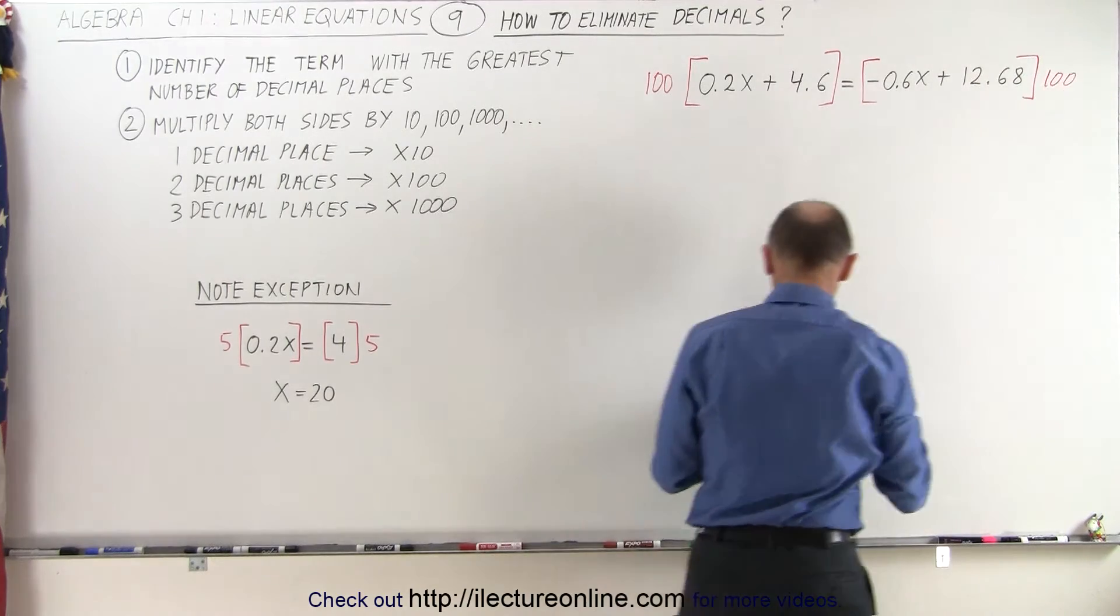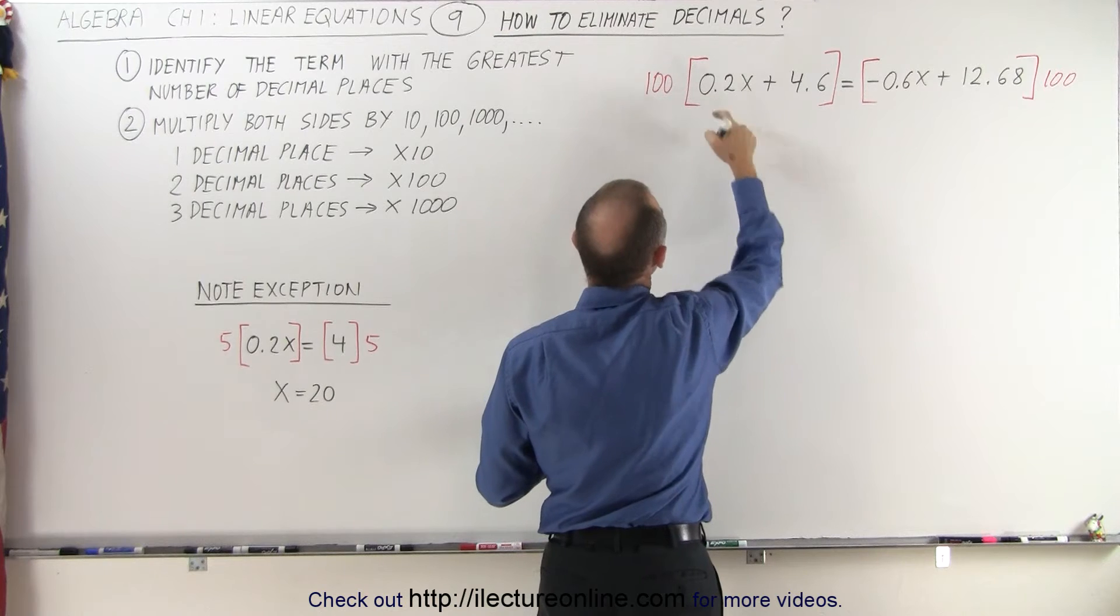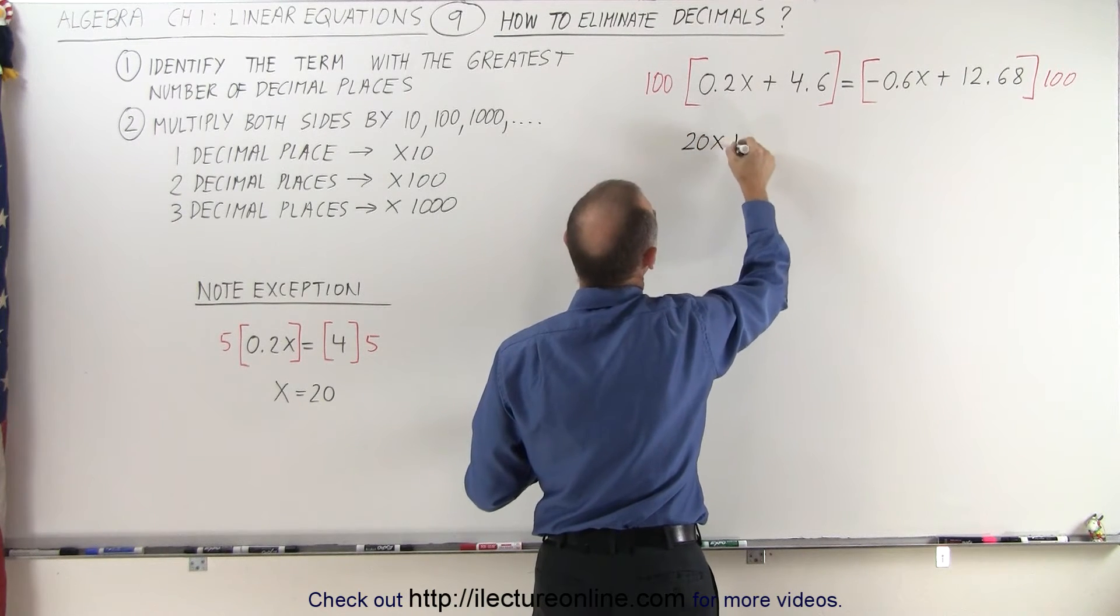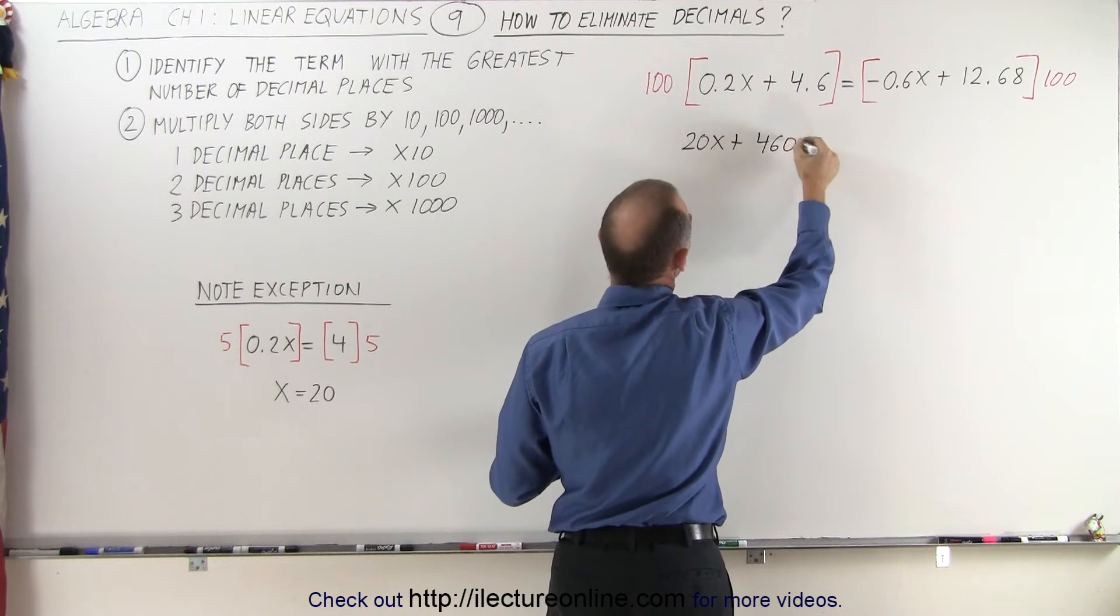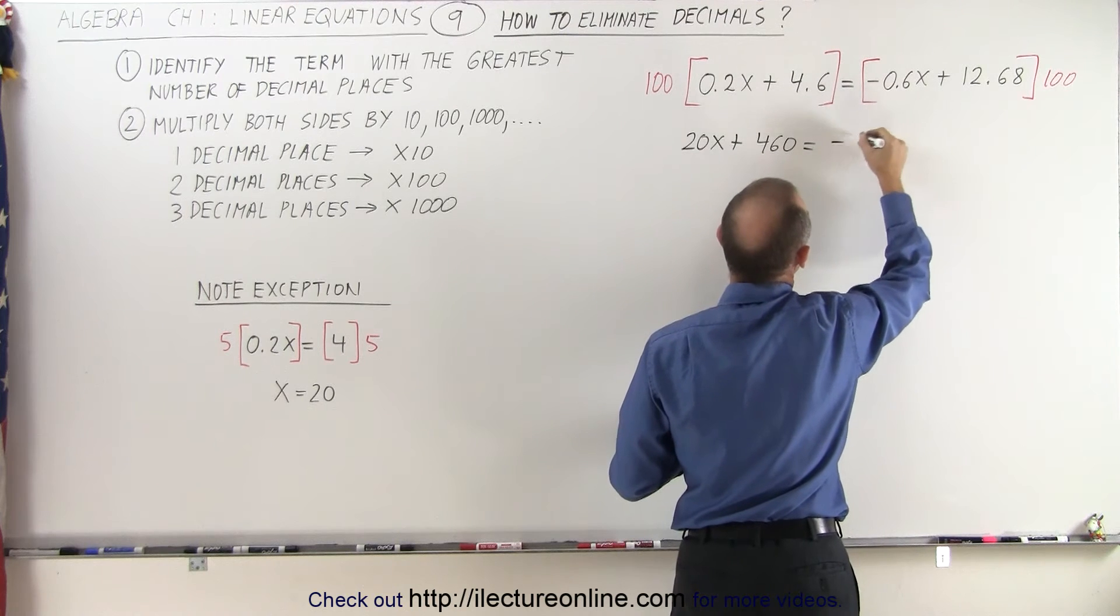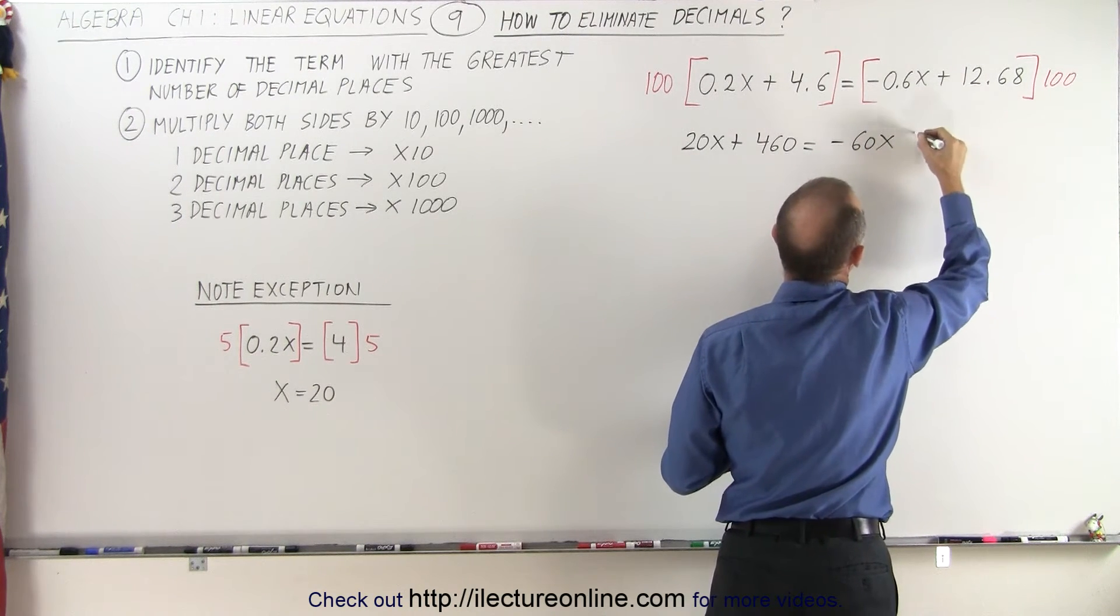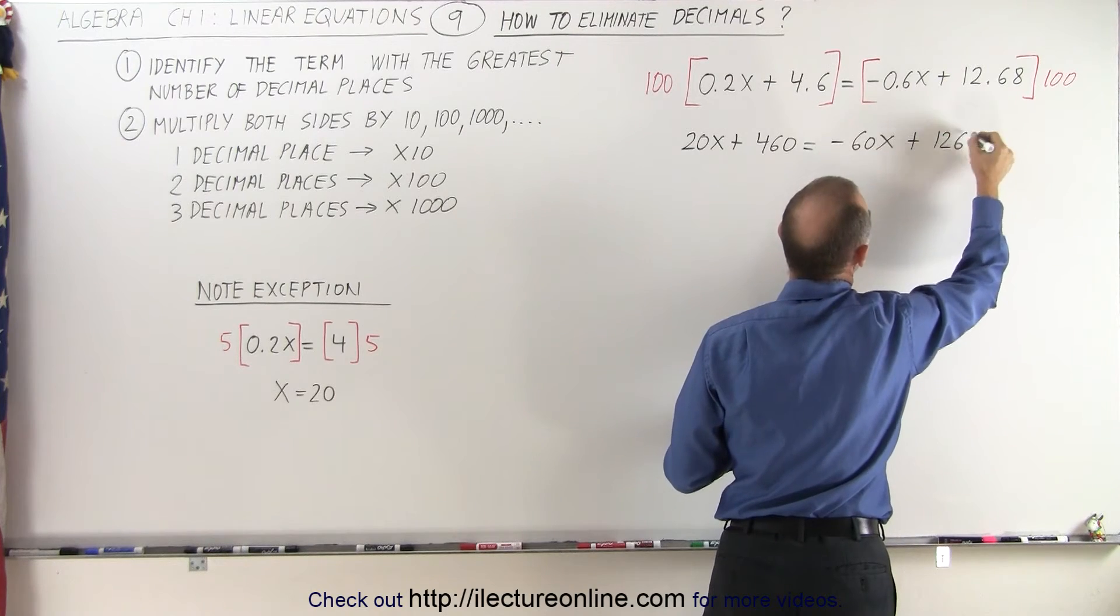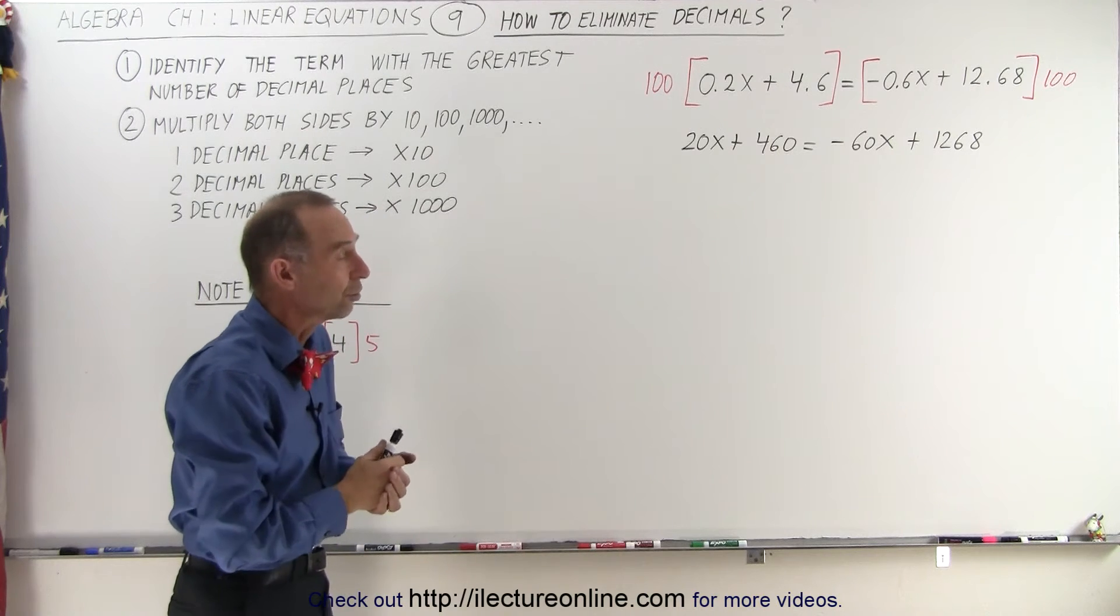When we multiply both sides by 100, what does that then become? 100 times 0.2 is 20, so we end up with 20x, plus 4.6 times 100 is 460, equals negative 0.6x times 100 is negative 60x, and 12.68 times 100 is plus 1,268. And now notice we have just a regular linear equation.